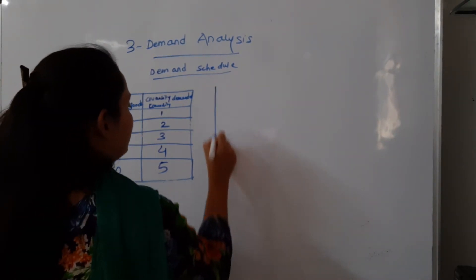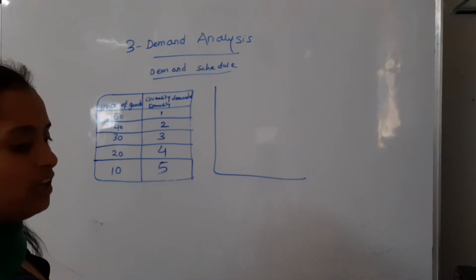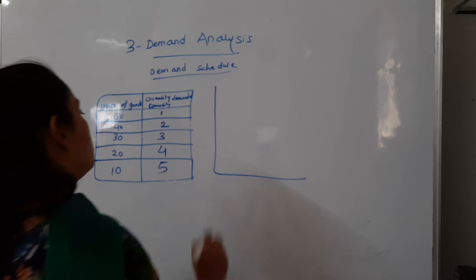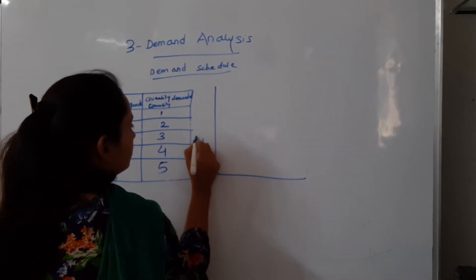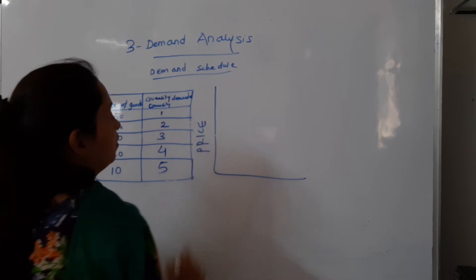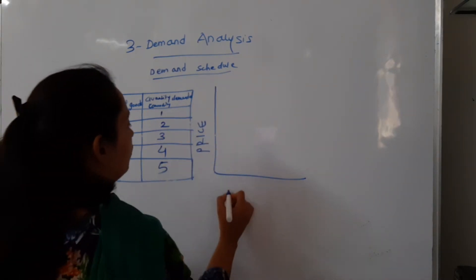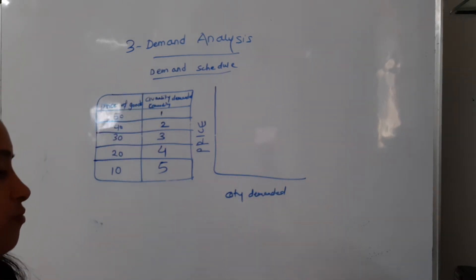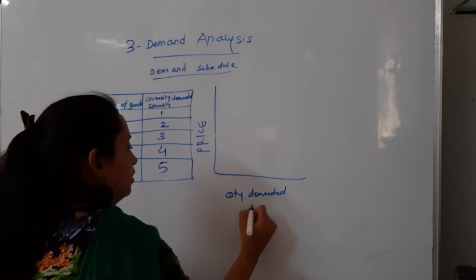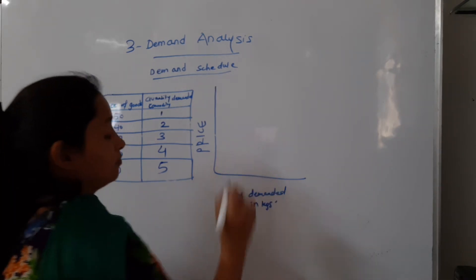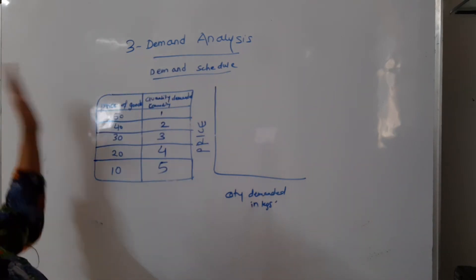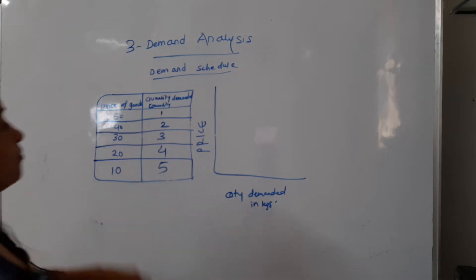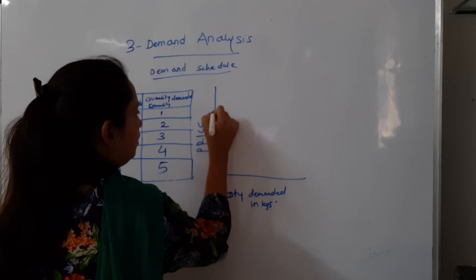Aayye, isi cheez ko hum log graphical way mein check out karte hain. On the Y-axis we have price, and on the X-axis we have quantity demanded in kgs. Prices on the graph go from 10, 20, 30, 40, and 50, and quantity demanded goes from 1, 2, 3, 4, and 5.